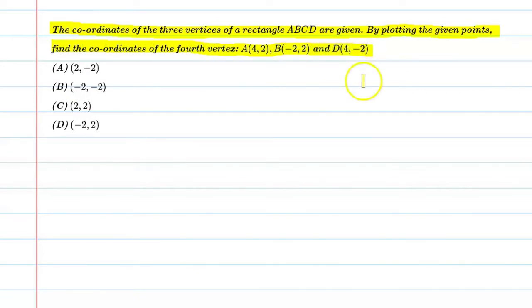So what does this question mean? This question means that we have a rectangle where the coordinates A, B, and D are given, and the fourth coordinate which is missing is C, which we will find. So let's start.